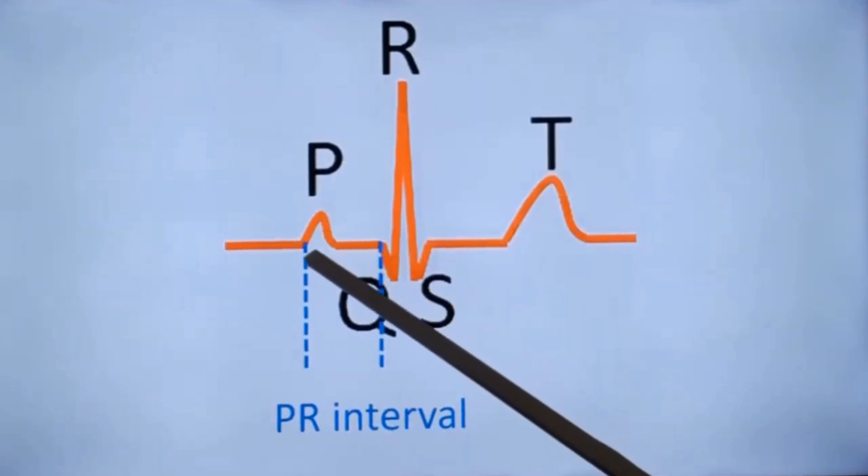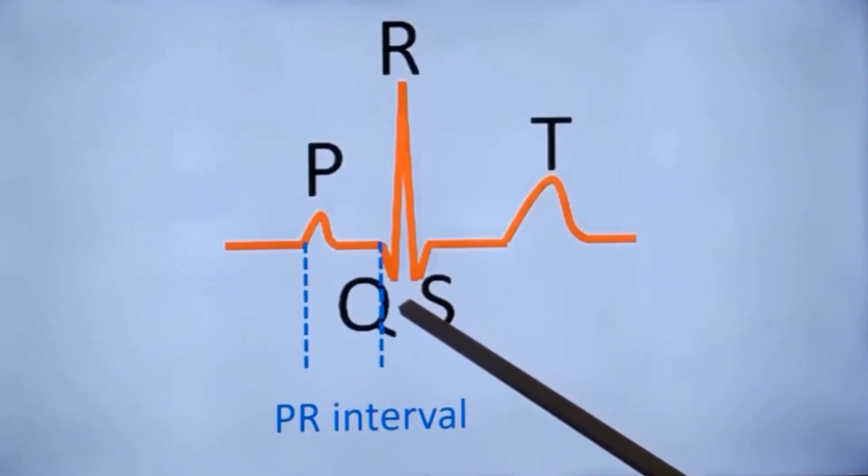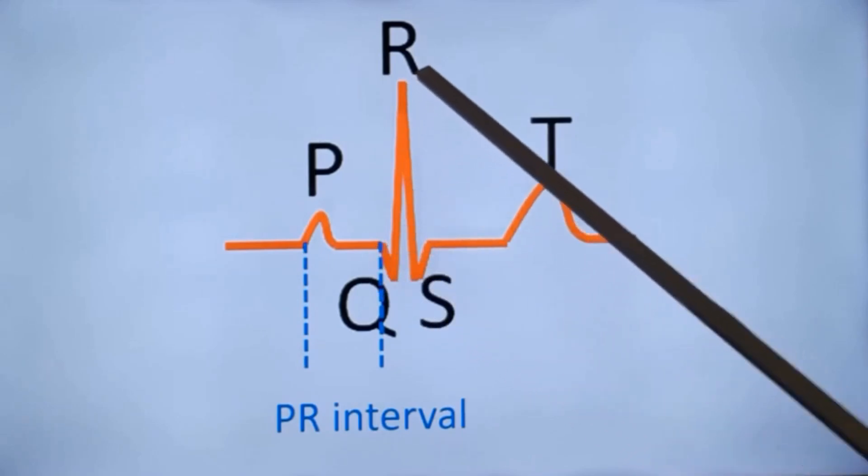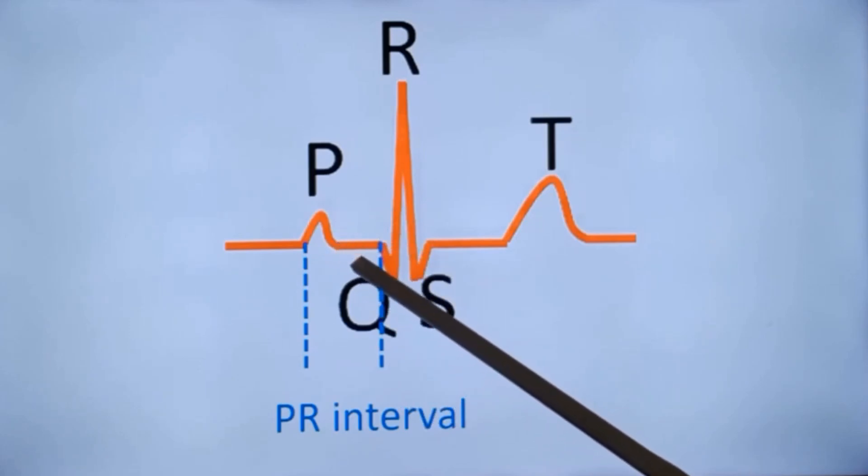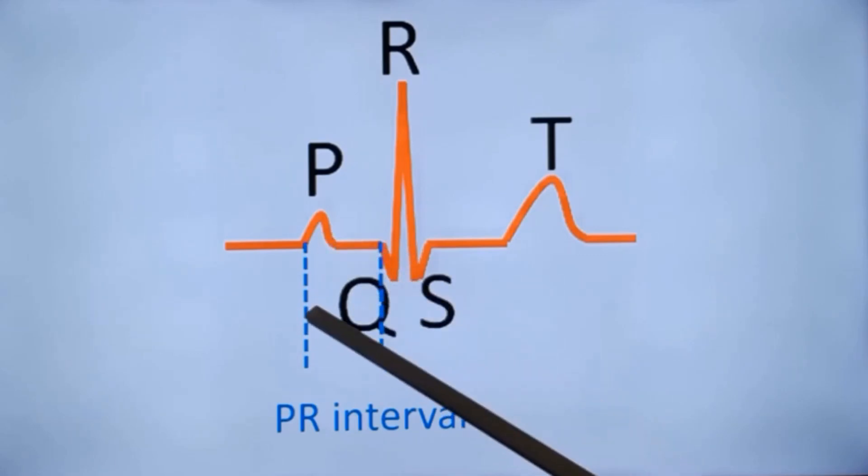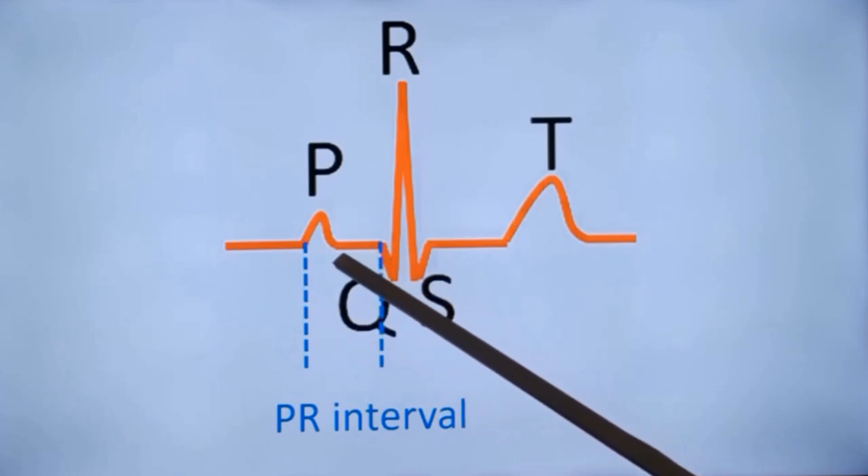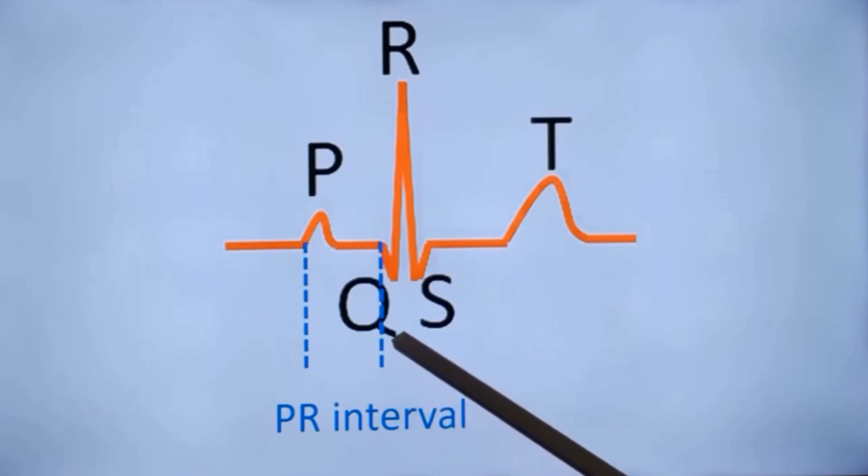PR interval is from the onset of P wave to the onset of the QRS complex. If there is a Q wave, up to the onset of the Q wave. If there is no Q wave, up to the onset of the R wave. That is how PR interval is calculated. It includes P wave and PR segment. So it is atrial conduction as well as conduction through the AV node. If intra-atrial conduction is delayed, P wave widens, then also PR interval widens. But most of it is contributed by atrioventricular conduction. Short PR interval occurs in WPW syndrome. And long PR interval occurs in atrioventricular, AV block.